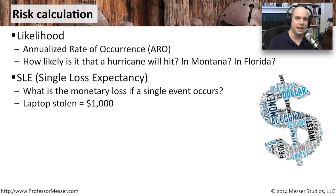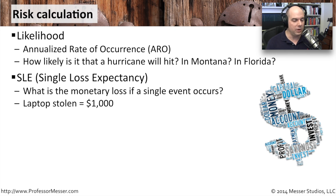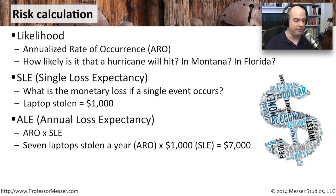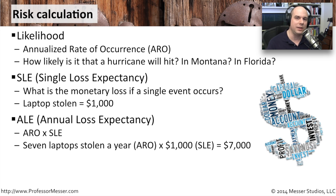In the case of something like a hurricane, that loss expectancy has a very broad number. But in this example, let's say it's a laptop stolen and it's $1,000 in that Single Loss Expectancy. If you want to compute the loss annually, take your Annualized Rate of Occurrence and multiply it by the Single Loss Expectancy. So if you have seven laptops stolen in a year, that's your ARO, and the Single Loss Expectancy is $1,000 — then over an entire year we can expect $7,000 of risk. If there's an uptick we lose more; if fewer occur, we lose less. This is how we calculate Annualized Loss Expectancy for the year.